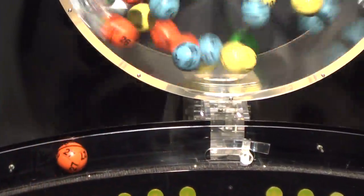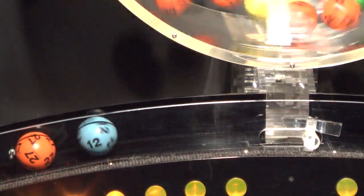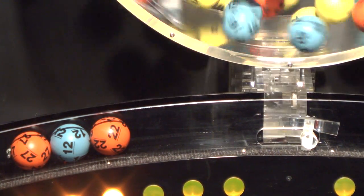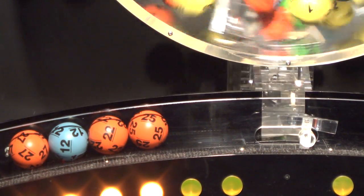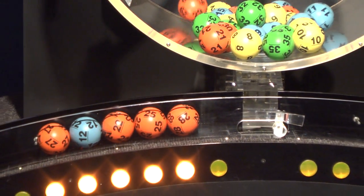Our first number is number 27. Following that we have number 12. Up next is 22. If you match these three numbers you've already won a prize. Up next is 25. And the final ball in this sequence is number 28.